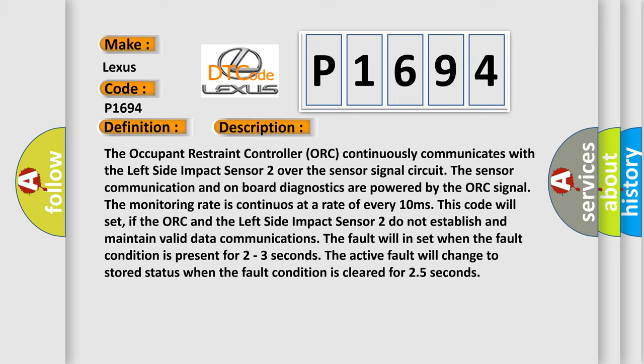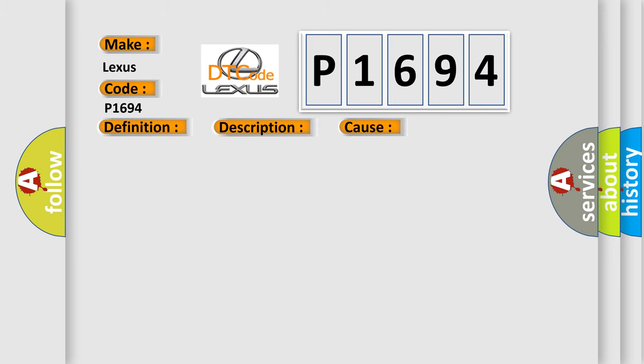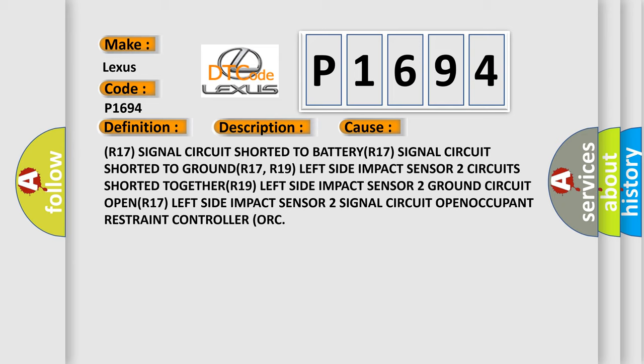The active fault will change to stored status when the fault condition is cleared for 25 seconds. This diagnostic error occurs most often in these cases: R17 signal circuit shorted to battery; R17 signal circuit shorted to ground; R17/R19 left side impact sensor 2 circuit shorted together; R19 left side impact sensor 2 ground circuit open; R17 left side impact sensor 2 signal circuit open; or a faulty occupant restraint controller (ORC).